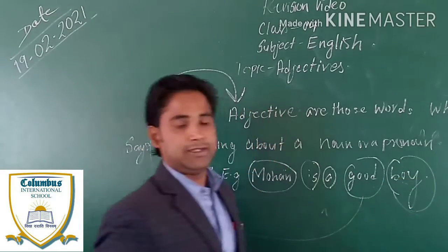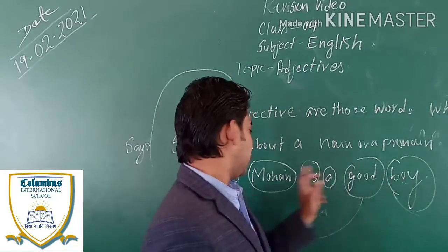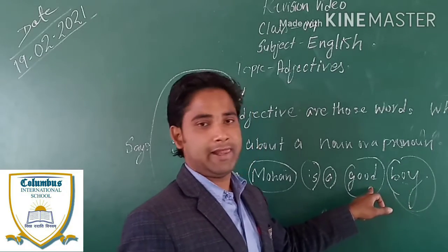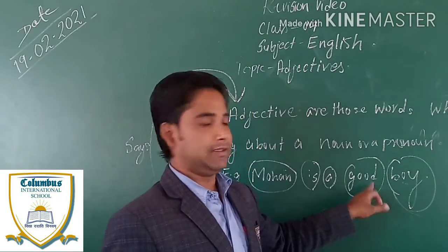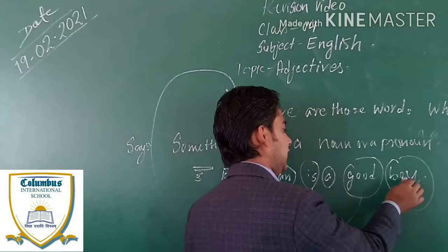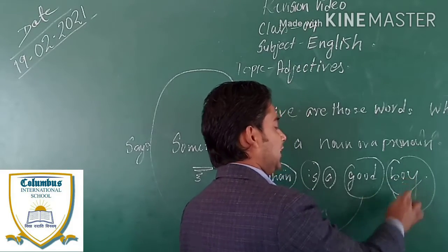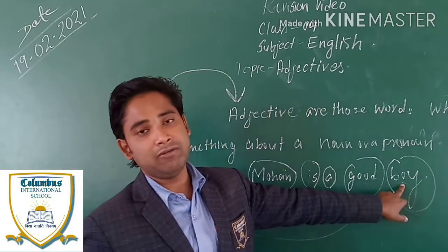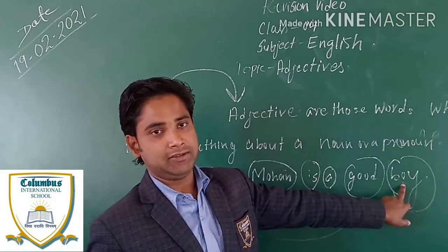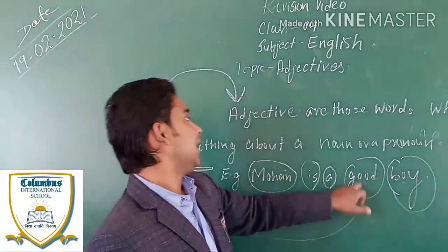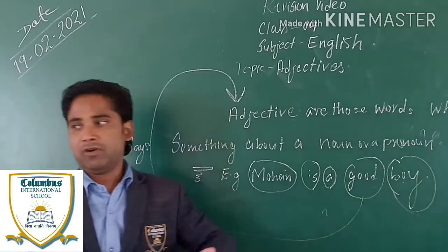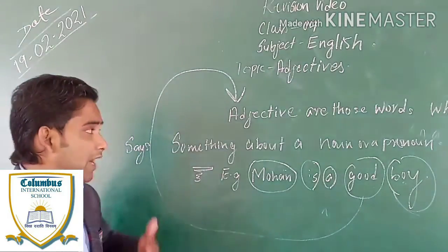Why is 'good' an adjective? Because this word is telling us something about the noun 'boy', which is acting as an object. What type of boy is Mohan? He is a good boy. So it is saying that this boy is good — we are speaking about the quality of the child. So this is an adjective.